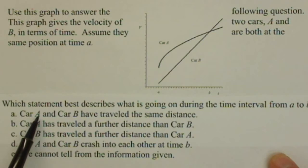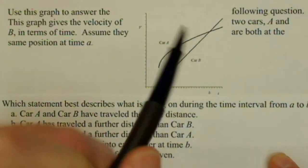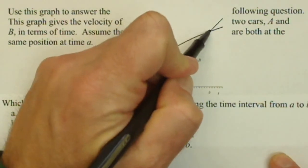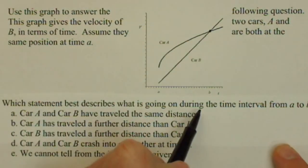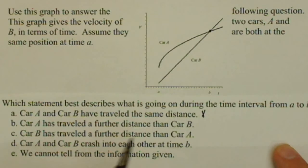So, A, car A and car B have traveled the same distance. That's actually, we're going to find out, not to be true. At B, we are noticing that the intersection, remember the output is velocity, not distance. So, it's not going to be that they traveled the same distance.